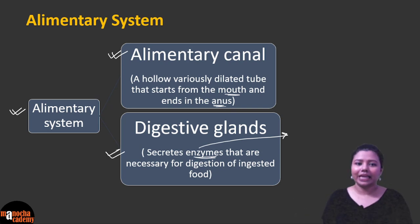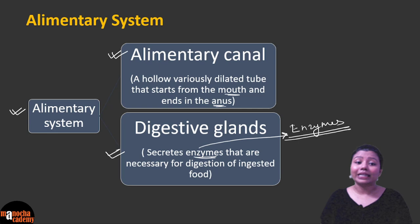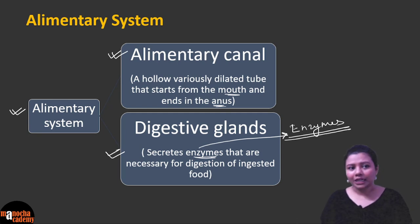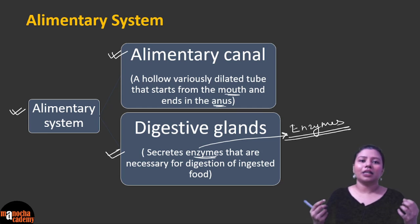When food passes through the alimentary canal, digestion cannot happen without enzymes. Without enzymes, your alimentary canal is just a tube — food will pass through but no reaction will take place. Digestive glands secrete enzymes necessary for digestion, and the hollow canal acts as the region where digestion takes place. Some enzymes released along with water and mucus are called juices, but the correct term for this specific substance is enzyme.